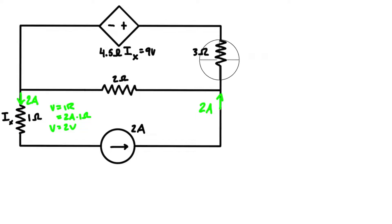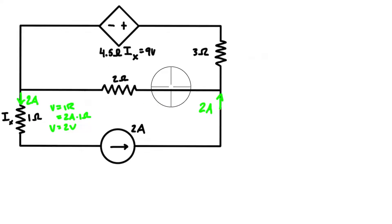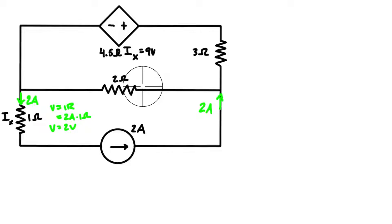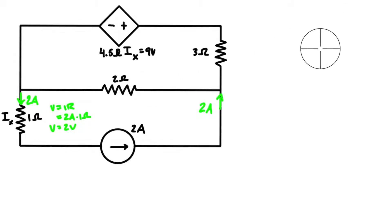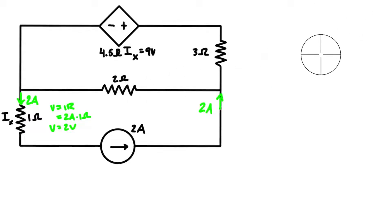For the other resistors, we don't know the current flowing through those branches right now. The easiest way to figure this out is to use mesh analysis. I'll put a link in the top right corner to those videos when they're done.